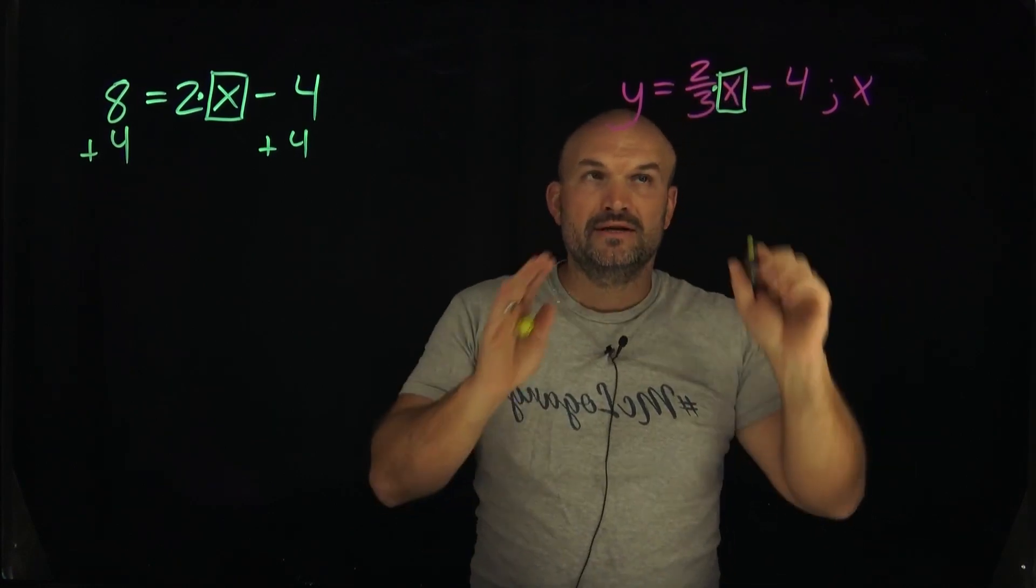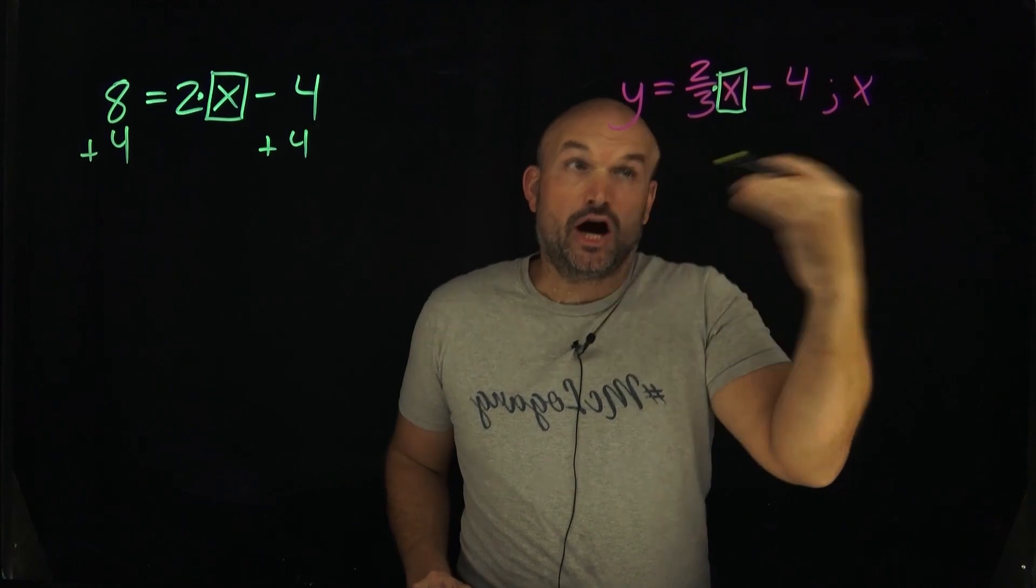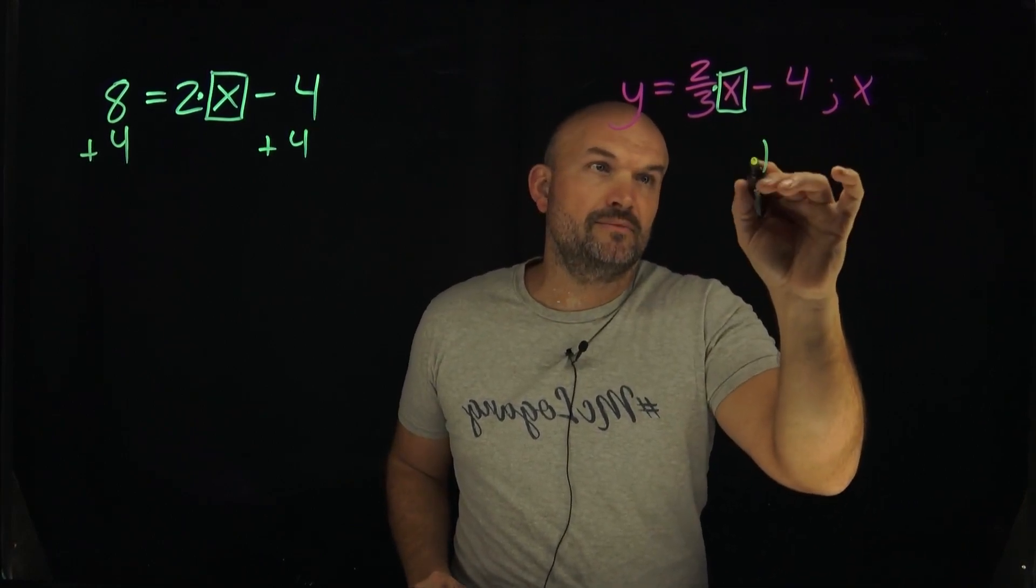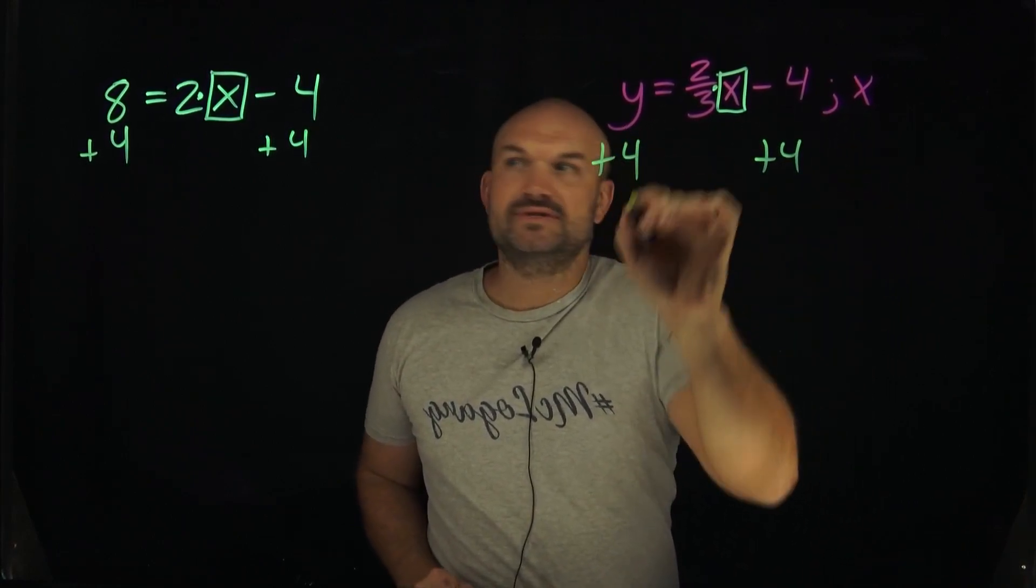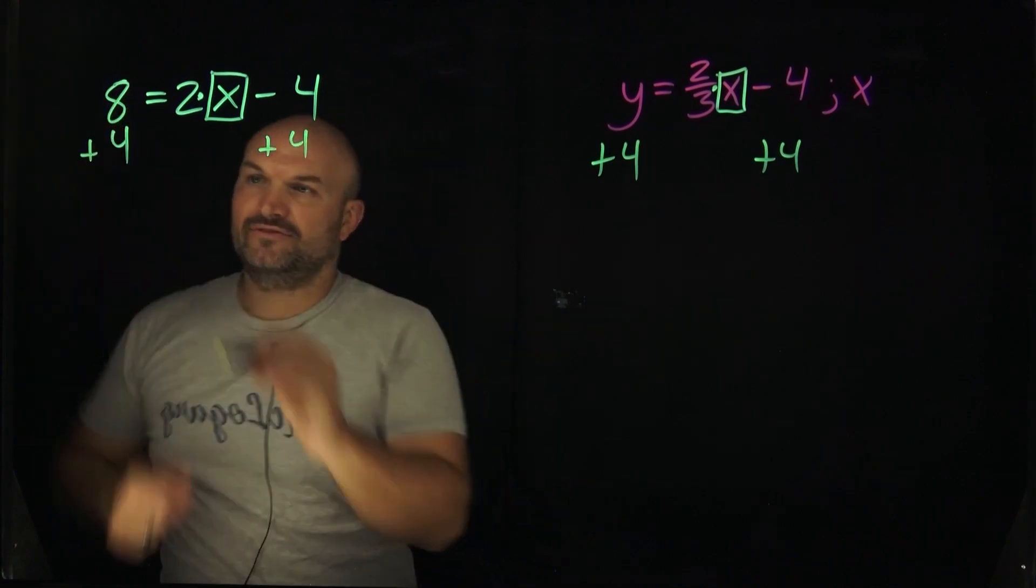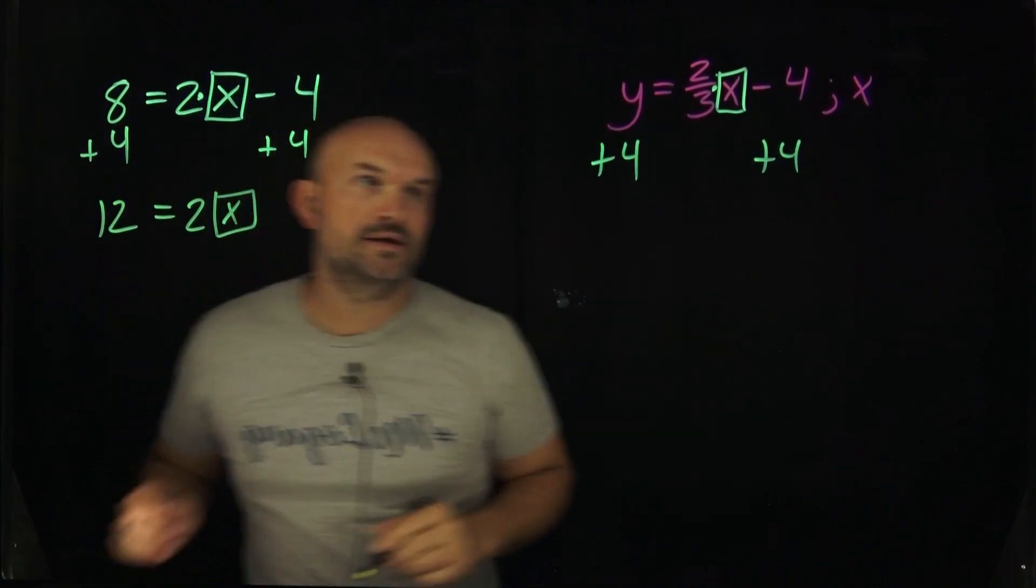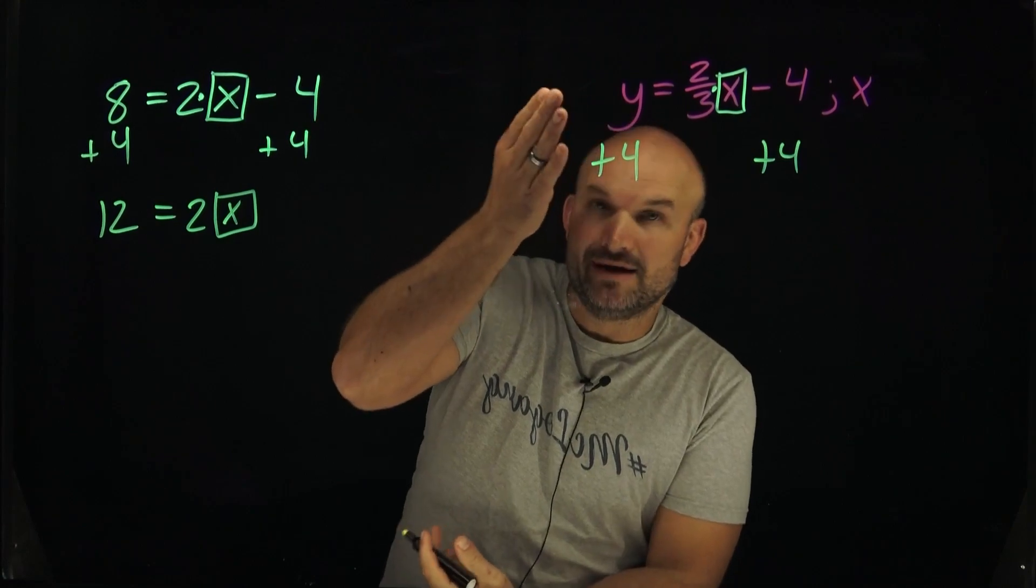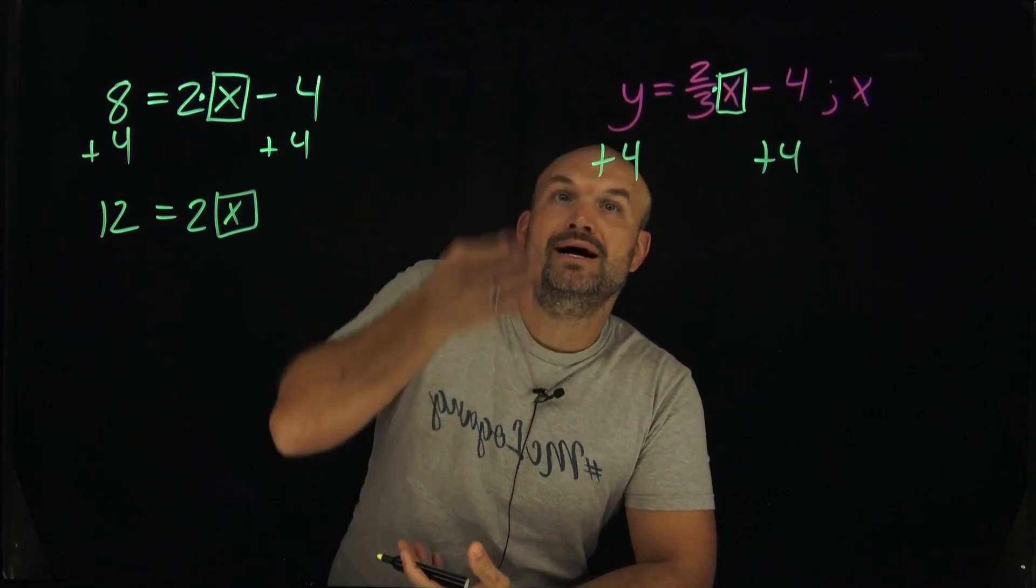Let's do something that may look more difficult with an x and a y and a fraction. Now I say, alright, I'm subtracting and multiplying. I have to undo subtraction first, so therefore I'm going to add a 4 to both sides. Over here when I added a 4, I get a 12.